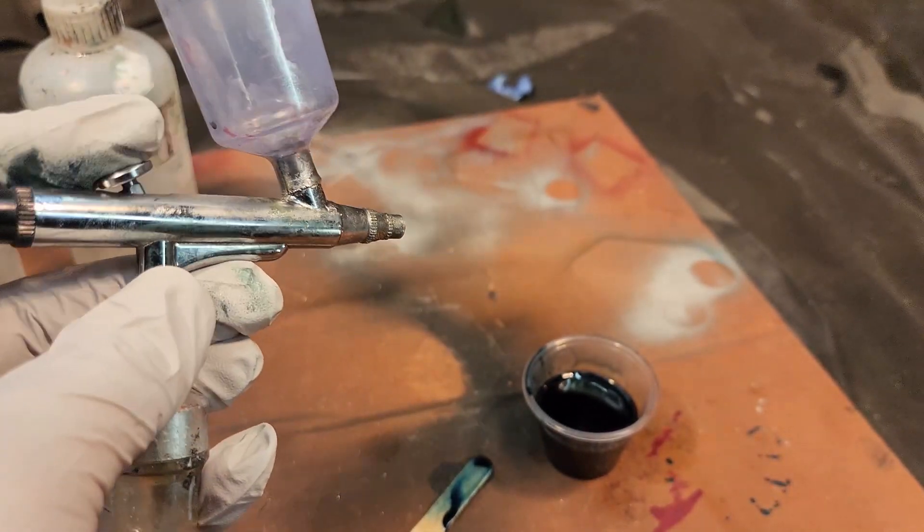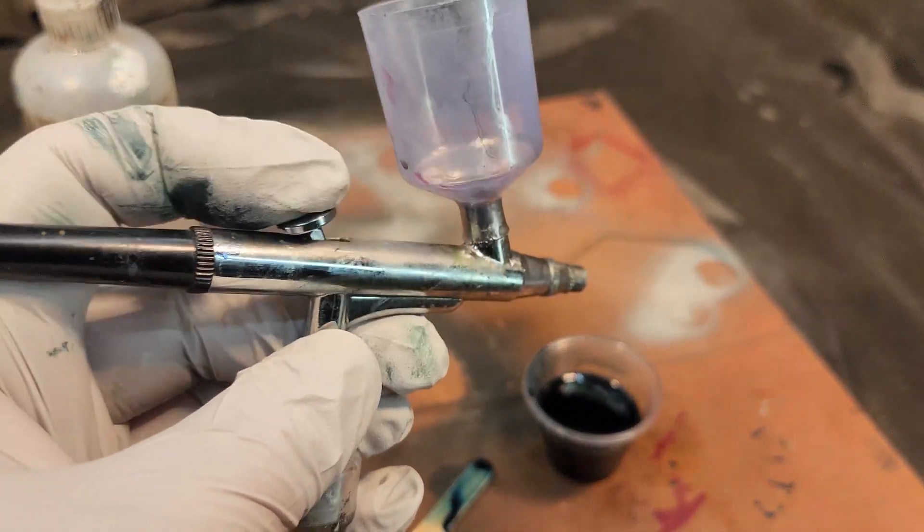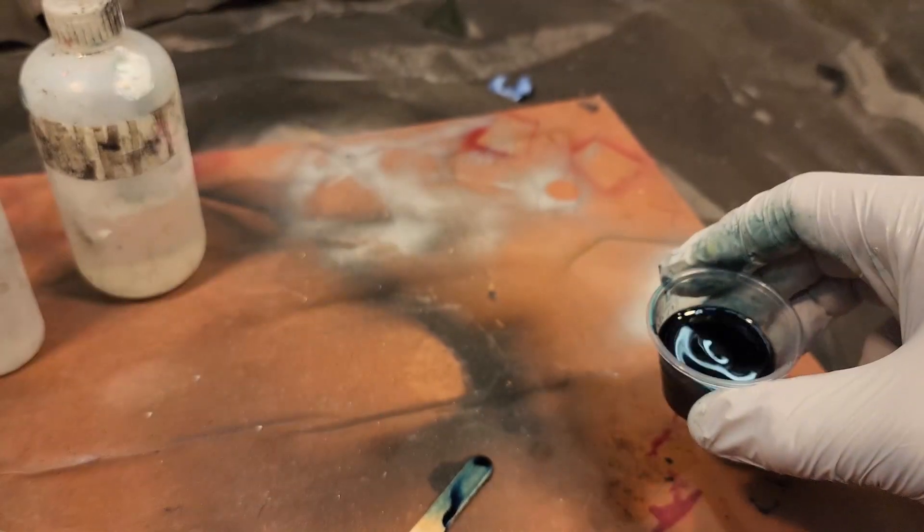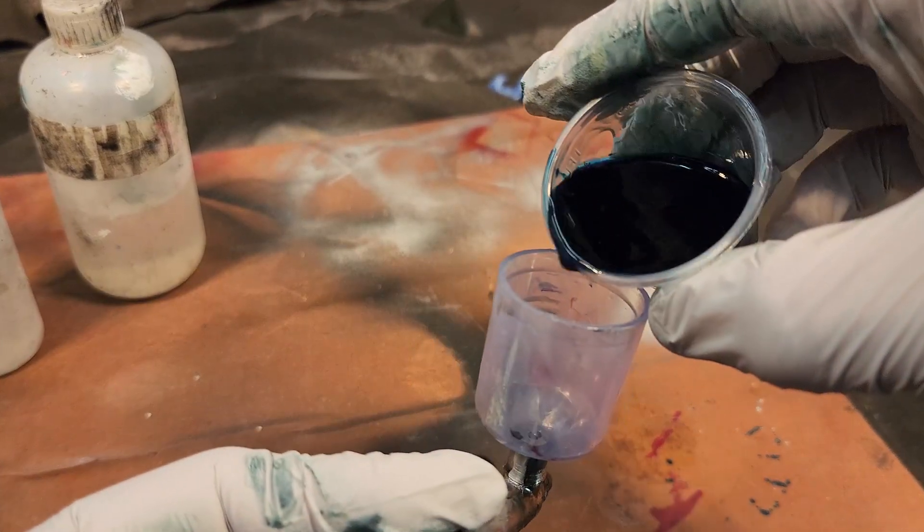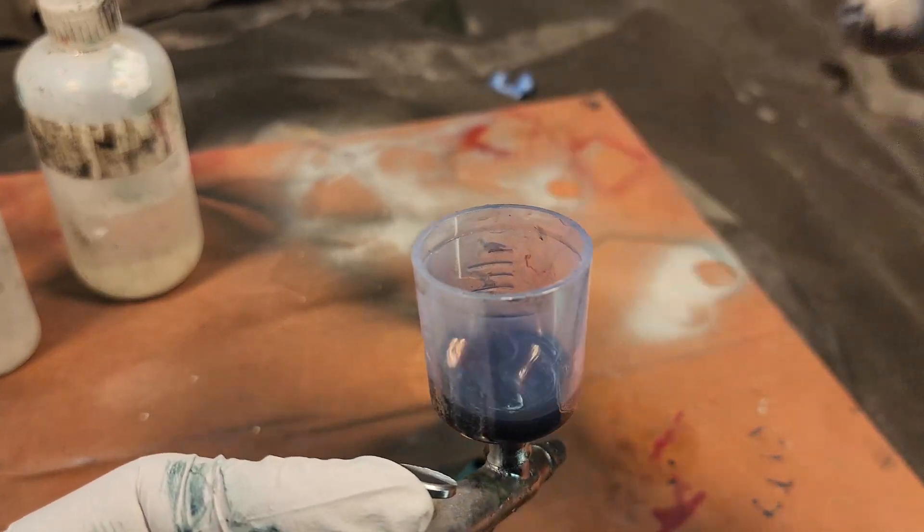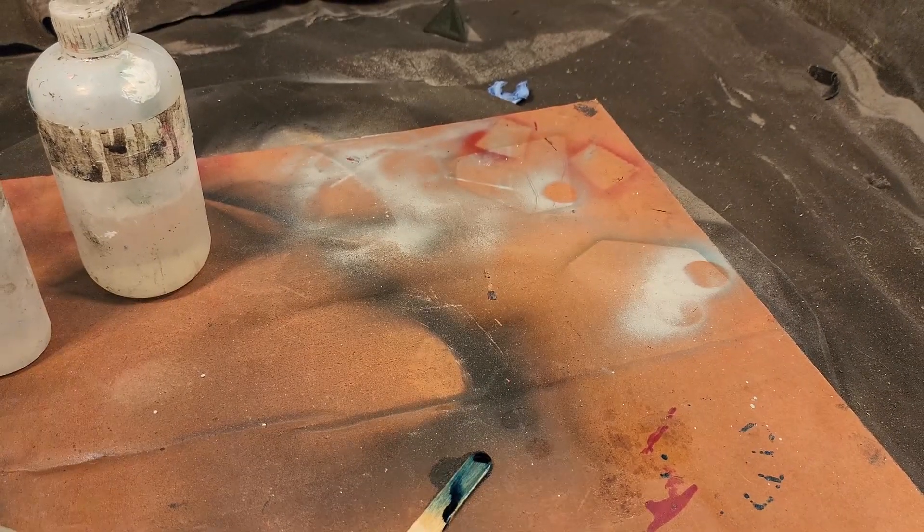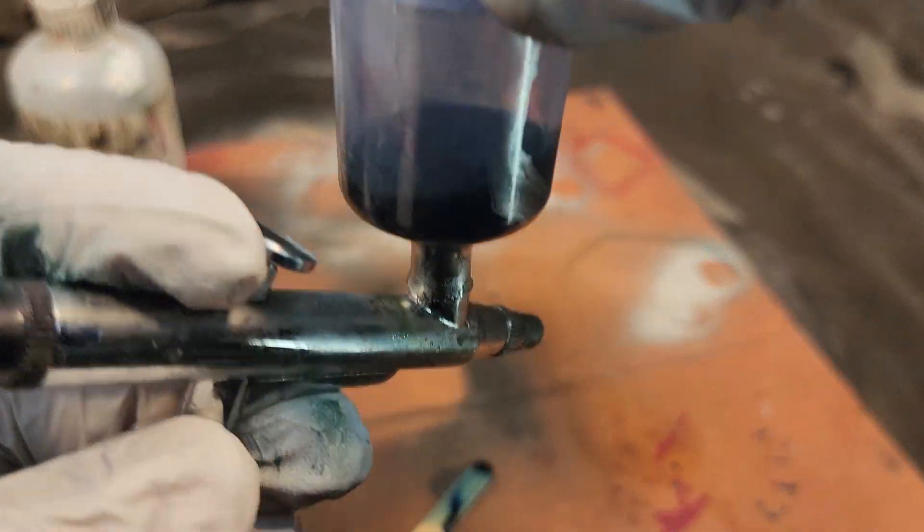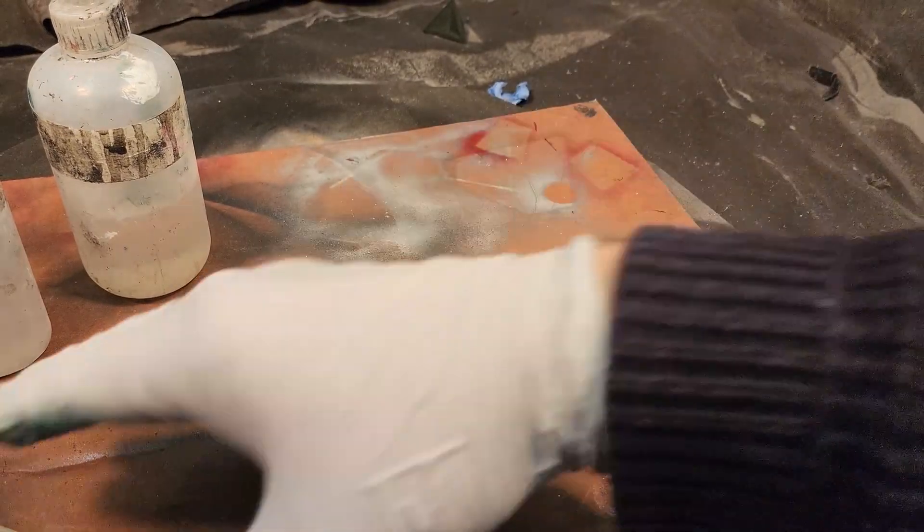All right. I've got my little airbrush here, got some blacker thinner in there just to make sure that the airbrush works. Now I'm going to pour, probably have way more here than I need for this gem. I'm just going to pour that in, and this is super simple.